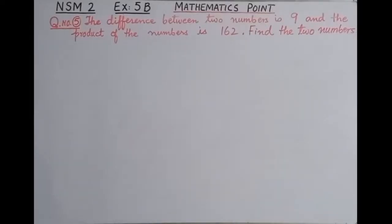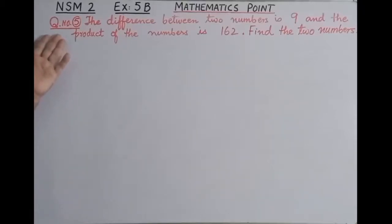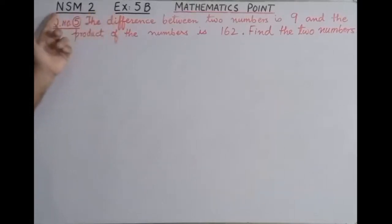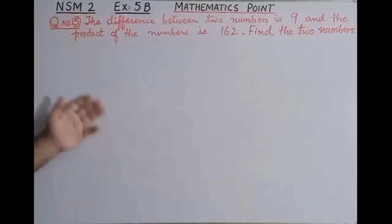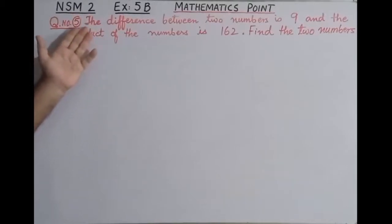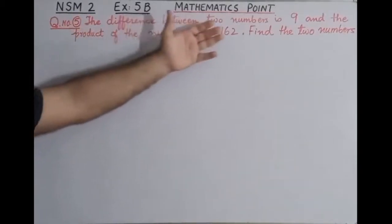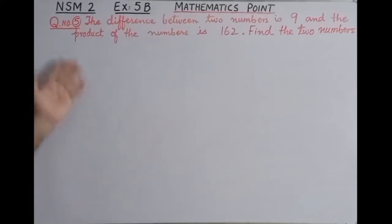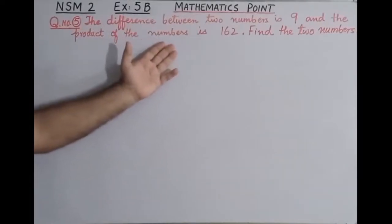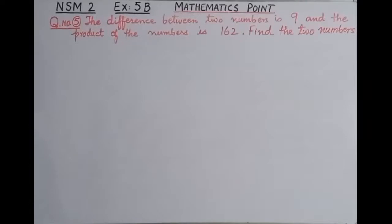Bismillahirrahmanirrahim, Assalamu alaikum students. I hope that you are doing well. In today's video lecture you will learn about how to solve question number five, exercise 5B, new syllabus mathematics book 2. The question is: the difference between two numbers is 9 and the product of the numbers is 162. Find the two numbers.